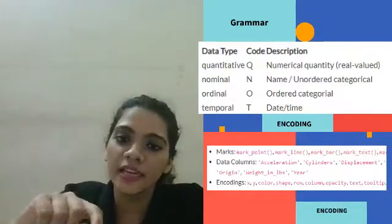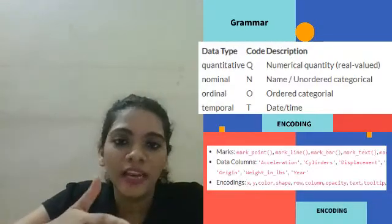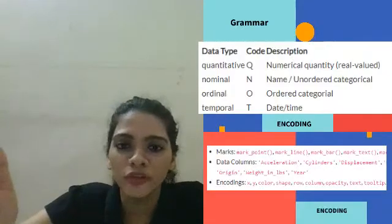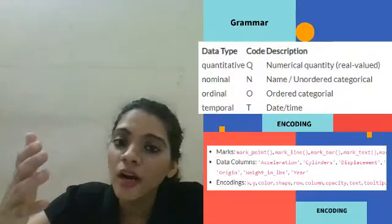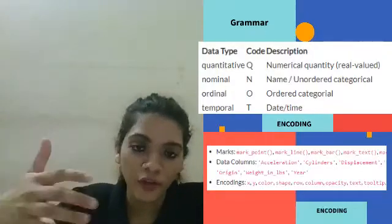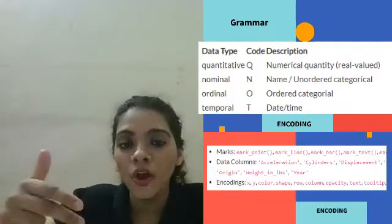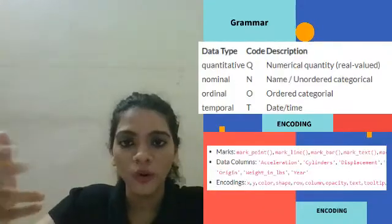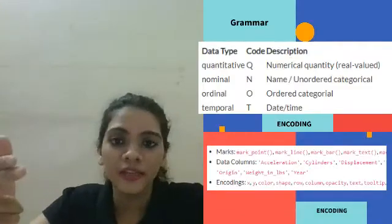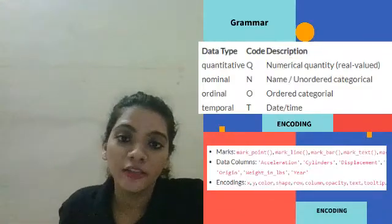This cars dataset has data columns like cylinder, horsepower, displacement, origin country, etc. In marks, you've got the mark through which you want to display the data - whether you want a point, line, circles, rectangle, or area. We will explore these when doing our practical session with Altair.